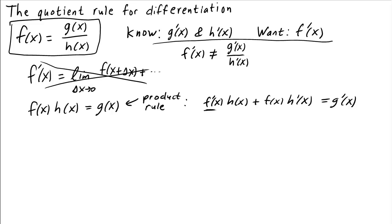But we can solve this for f prime by subtracting off f times h prime and then dividing by h. When we do this, we get that f prime of x is equal to g prime of x minus f of x times h prime of x all over h of x.